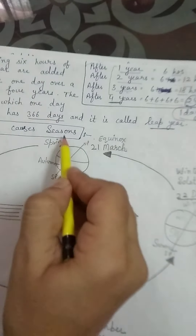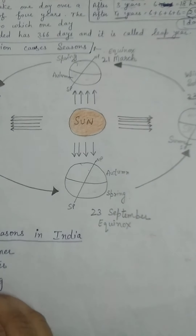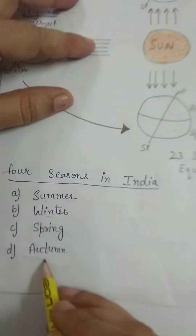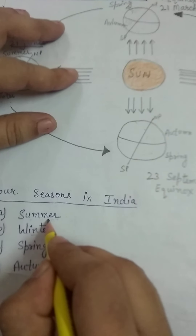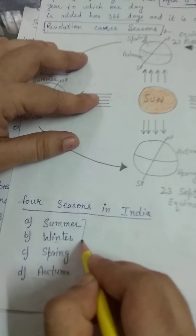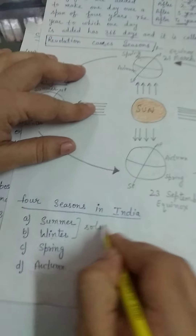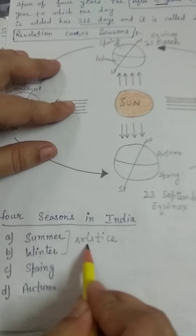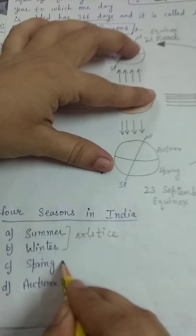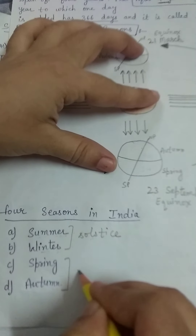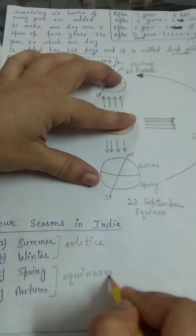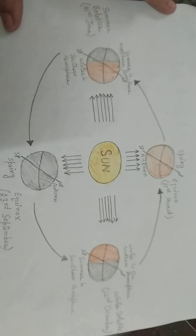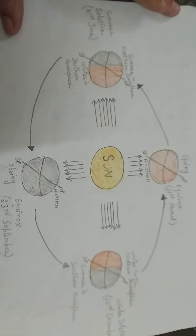Revolution causes seasons. There are four major seasons in India: summer season, winter season, spring season, and autumn season. Summer and winter seasons are considered in solstice — summer solstice and winter solstice. Spring and autumn seasons are considered in equinoxes — spring equinox and autumn equinox. See this diagram to understand the four seasons.